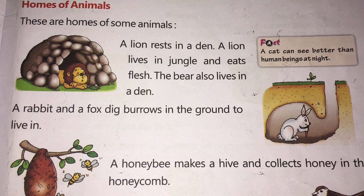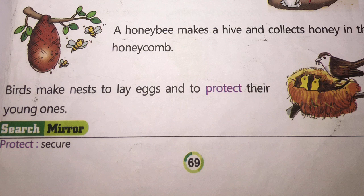A honey bee makes a hive and collects honey in the honeycomb. We have all seen honey — a honey bee makes honey and makes their hive, and they live inside it. Birds make nests to lay eggs and to protect their young ones. Can you see the nest? The birds make this nest to protect their young ones and give birth to their young ones in the nest.